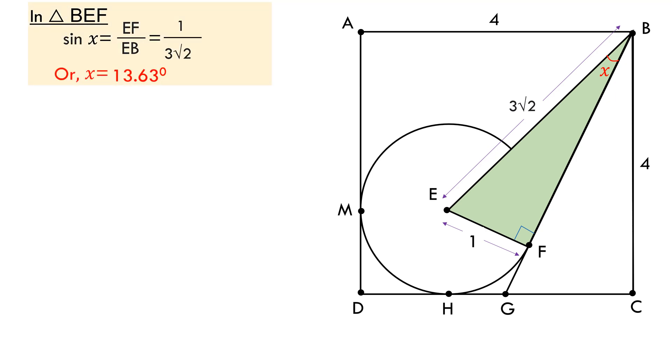Now we know that angle EBC is equal to 45 as EB bisects corner angle ABC of the square. Therefore if we were to call angle GBC as Y, angle Y equals 45 minus 13.63 degrees equals to 31.37 degrees.